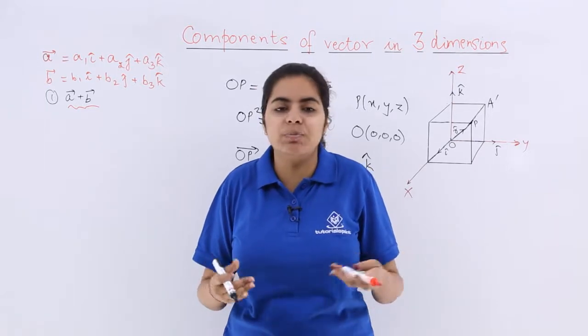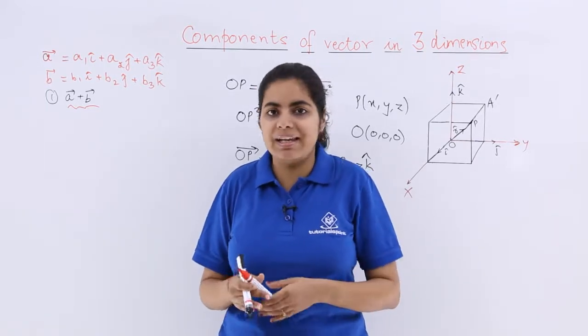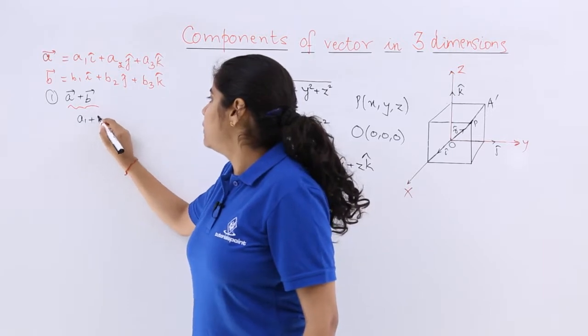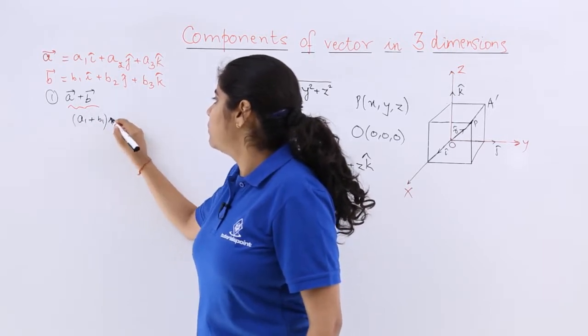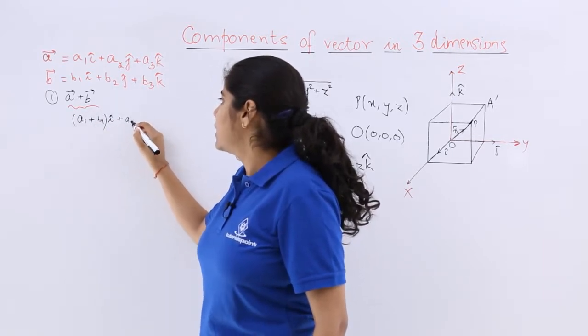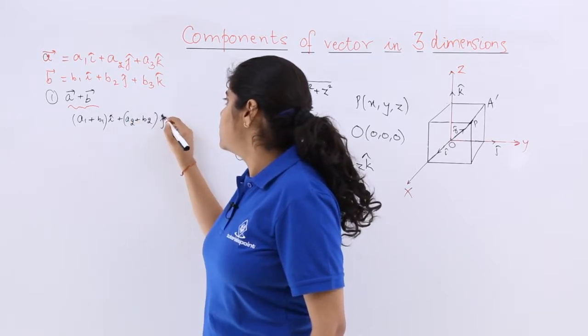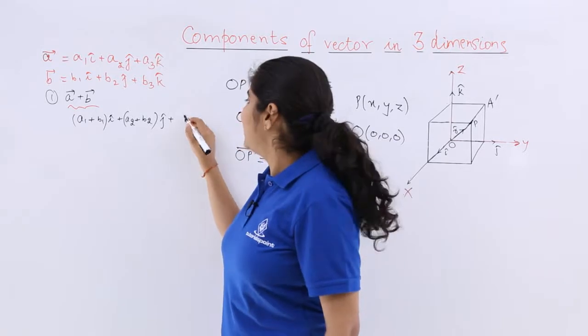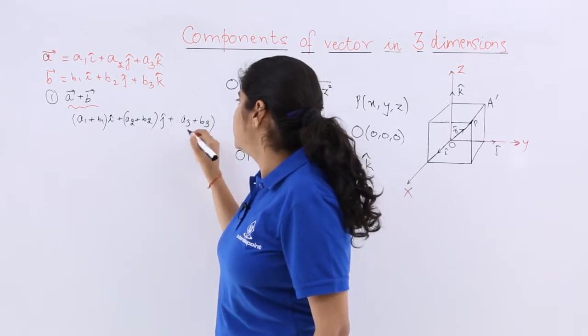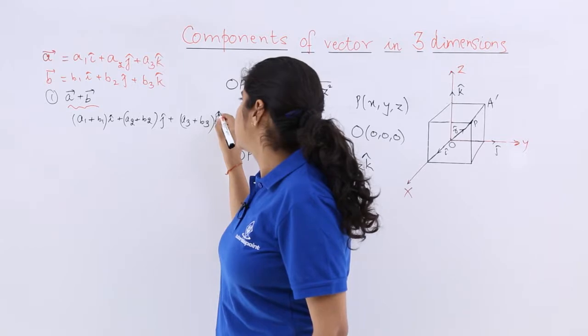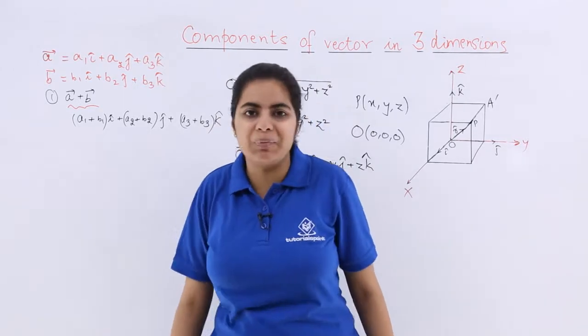It is simply like in algebra when we do like terms and unlike terms. So the resultant would be (a1+b1) i cap plus (a2+b2) j cap plus (a3+b3) k cap. So that is a plus b.